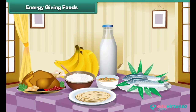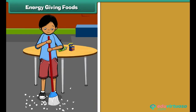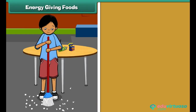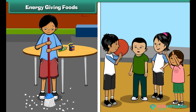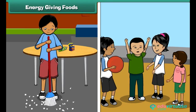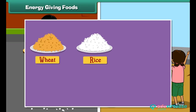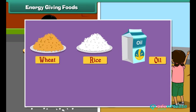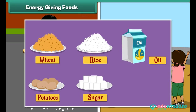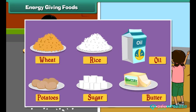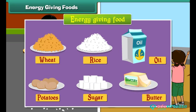Foods that give us energy to work, dance and play are called energy giving foods. Wheat, rice, oil, potatoes, sugar, butter, etc. are examples of energy giving foods.